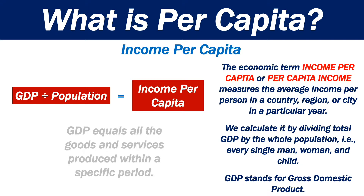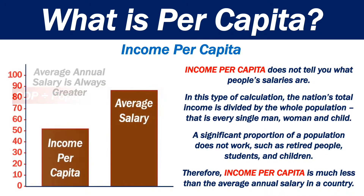GDP stands for gross domestic product. Income per capita does not tell you what people's salaries are. In this type of calculation, the nation's total income is divided by the whole population.